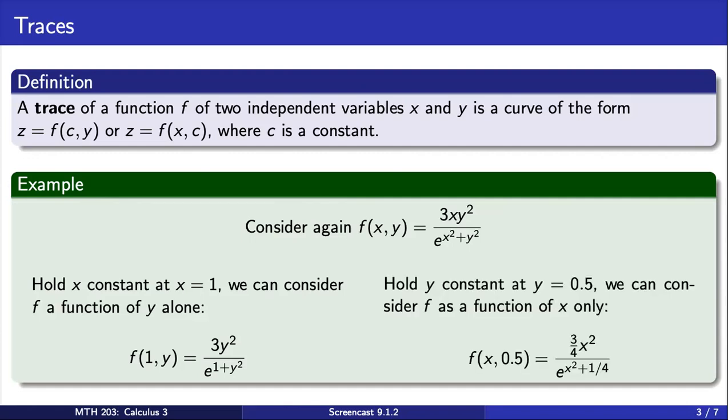Similarly, if we hold y constant at 0.5, we can consider f as a function of x only. This is the trace where y equals 0.5.